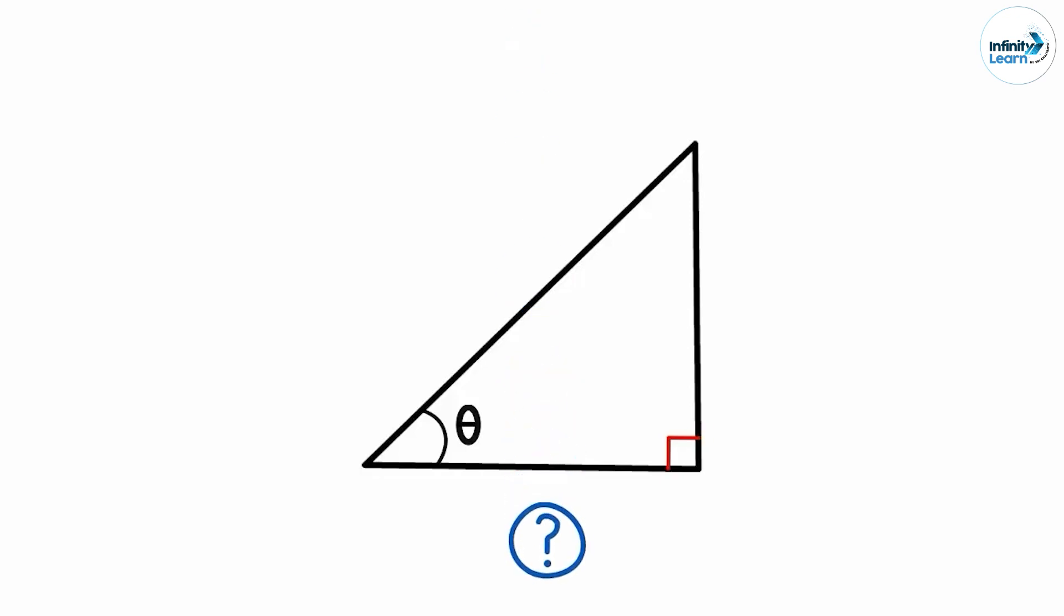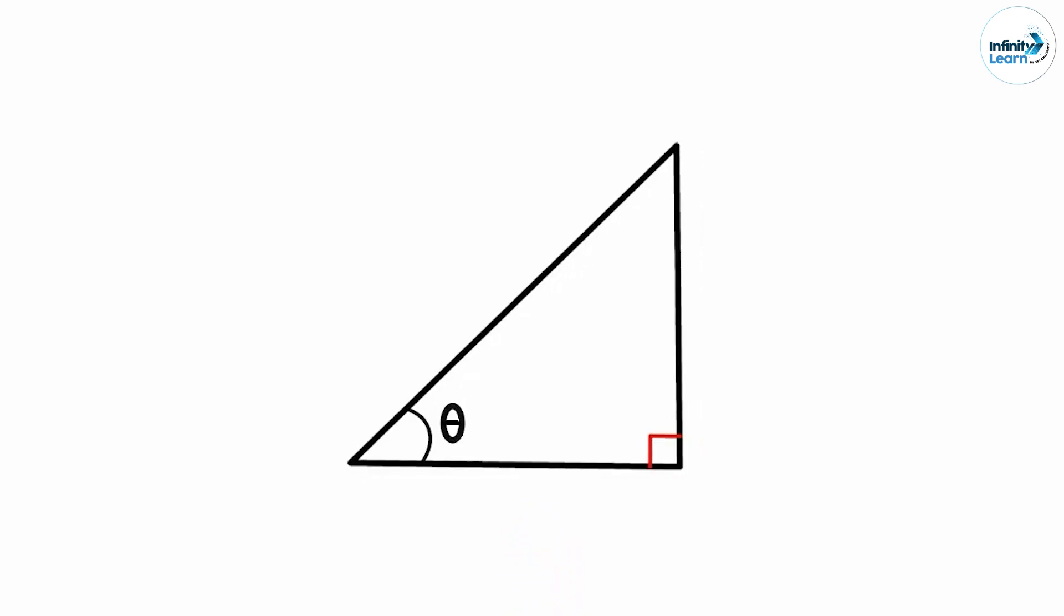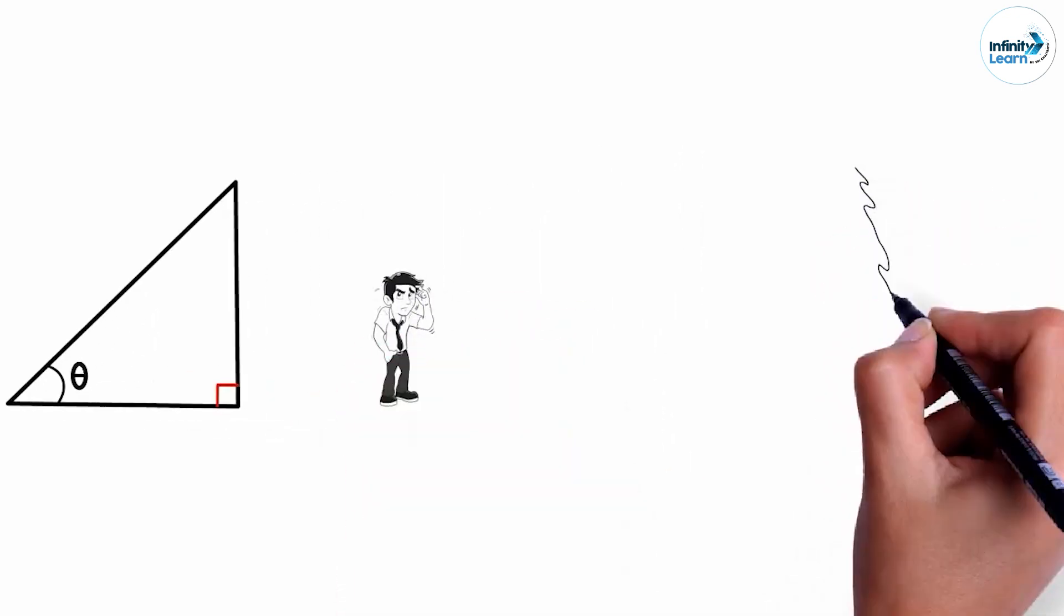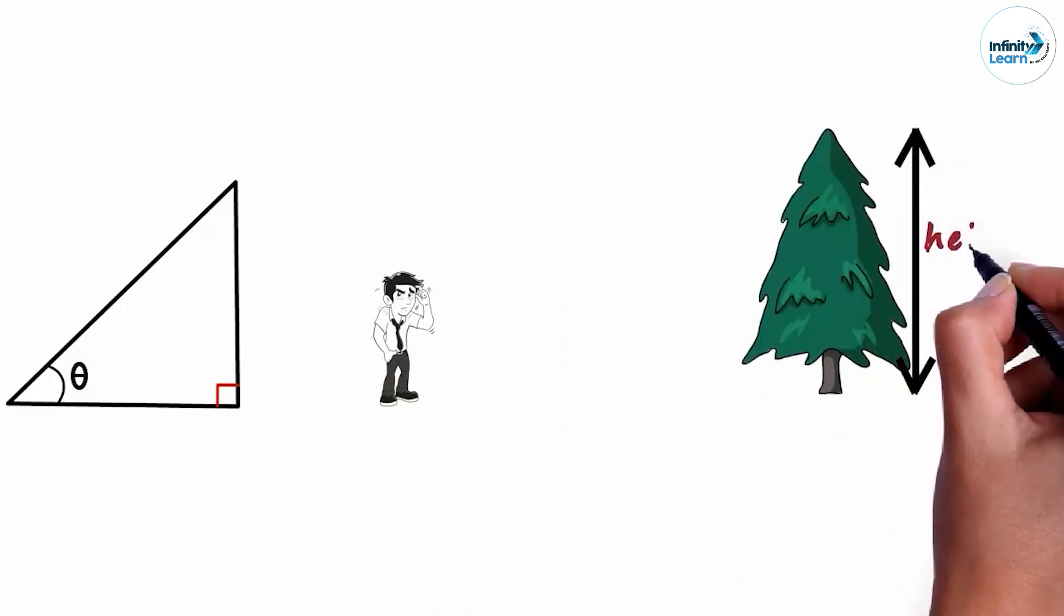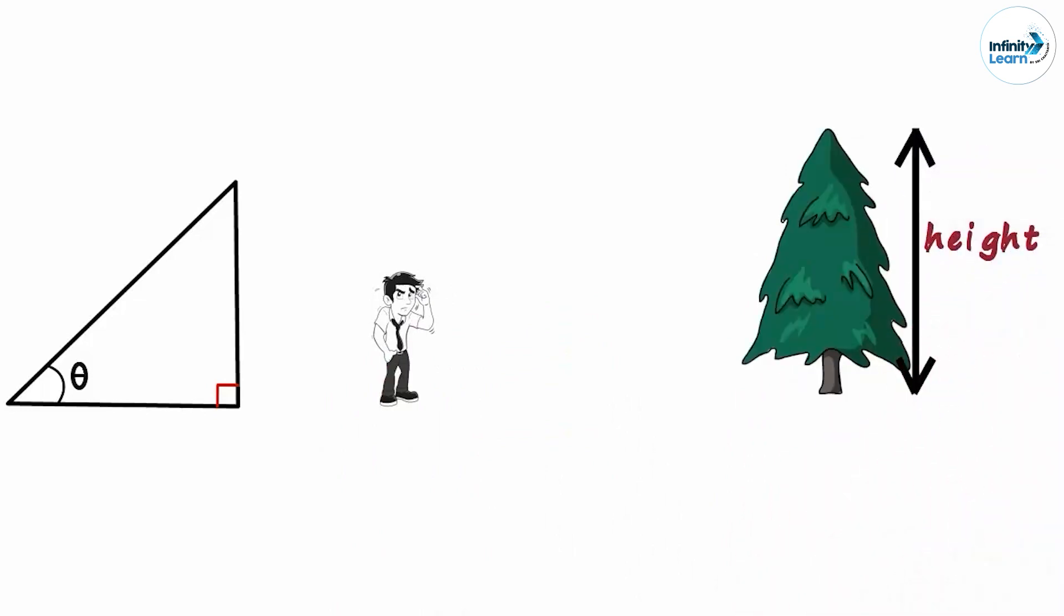But how do these kind of triangles help us in real life? How does Trigonometry help us in real life? Let's say, Zen wants to find the height of this tree. He has to measure this length, which is the height. One way is to make an approximate guess. But a better way to find the height is by using Trigonometry.